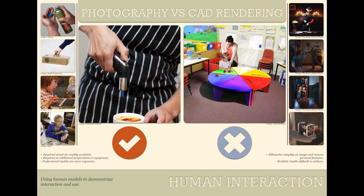Next is showing human interaction — showing humans using the products you are trying to show off, which is one of the main things product designers focus on. With a camera, you simply get a model to use or interact with your product. With CAD rendering, that's very difficult: it's a type of compositing requiring the lighting and perspective to be right, and you almost certainly can't just render a human in place because that's going to look terrible. So photography won this category easily.